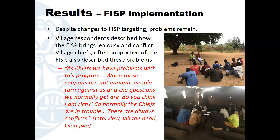Despite changes to FISP targeting, problems still remain in communities. Village respondents described how the FISP brings jealousy and conflict, and has even resulted in the death of chiefs. One village chief said: 'As chiefs, we have problems with this program. When these coupons are not enough, people turn against us, and the questions we normally get are, do you think I am rich? So normally the chiefs are in trouble, and there are always conflicts.'